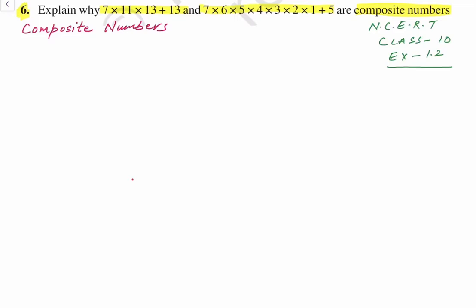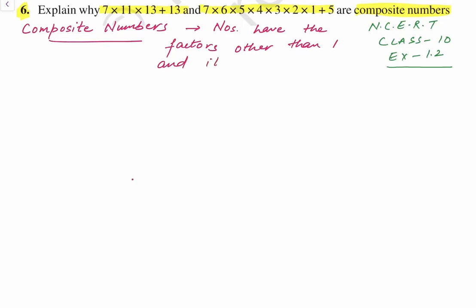The numbers which are not prime numbers are composite numbers. In other words, numbers that have factors other than 1 and itself are composite numbers.